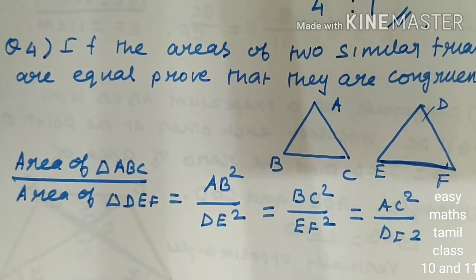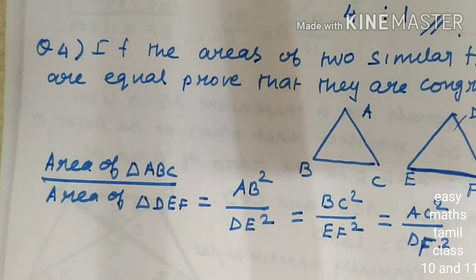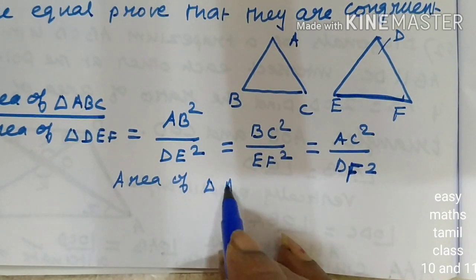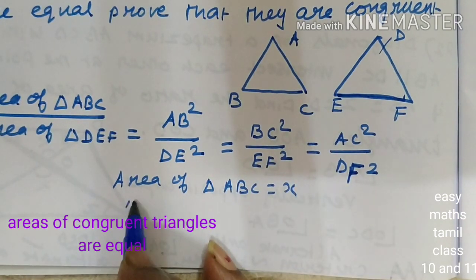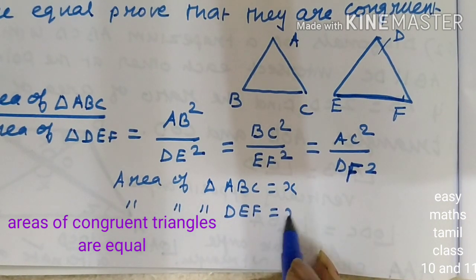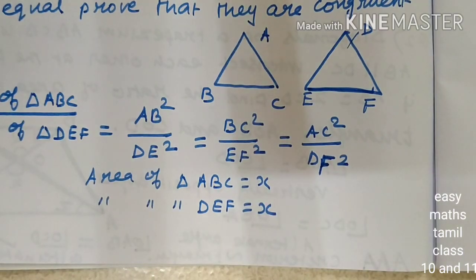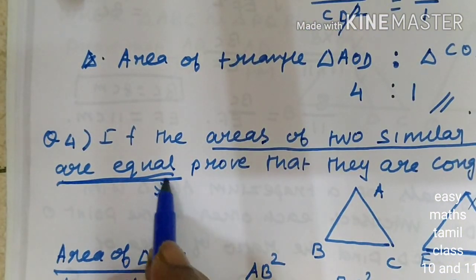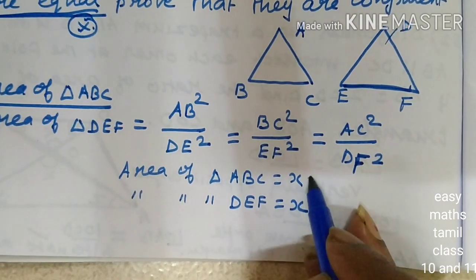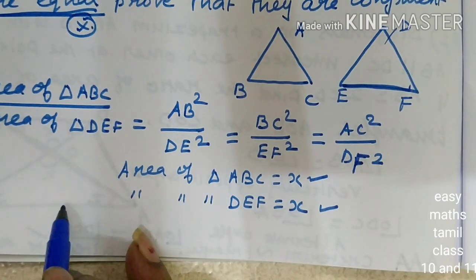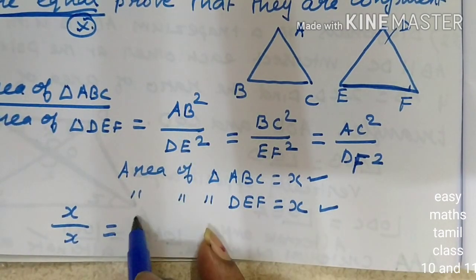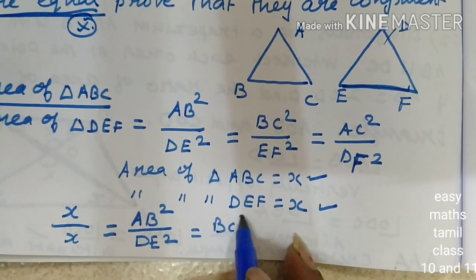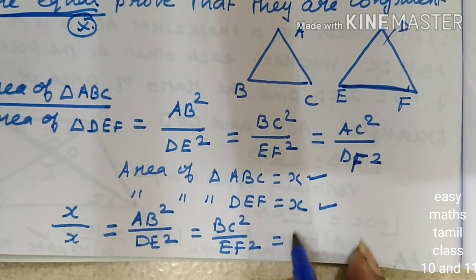Let the area of triangle ABC equal to X and area of triangle DEF also equal to X. So, X divided by X equals AB squared divided by DE squared, equals BC squared divided by EF squared, equals AC squared divided by DF squared.